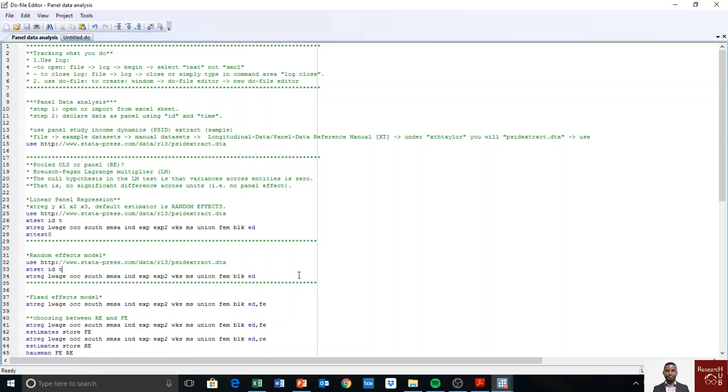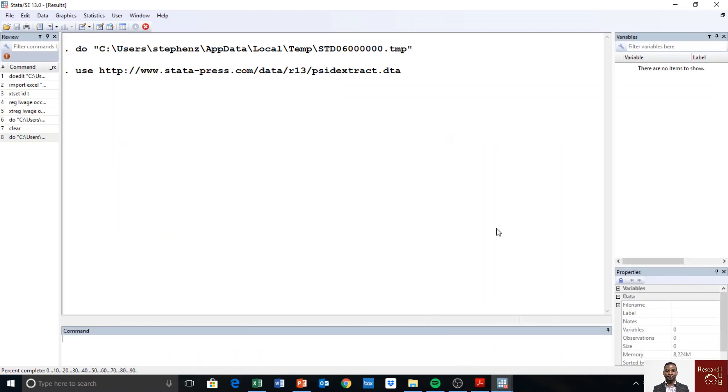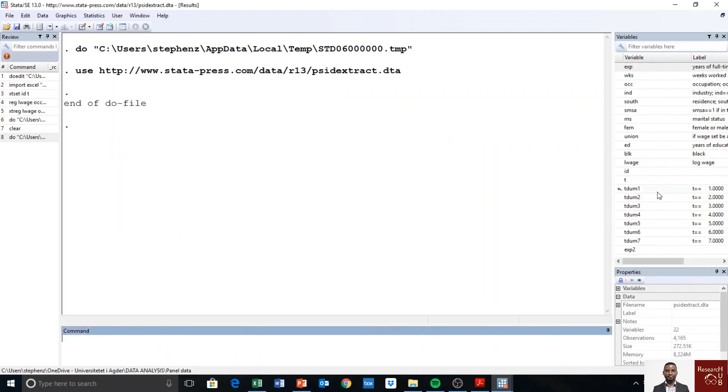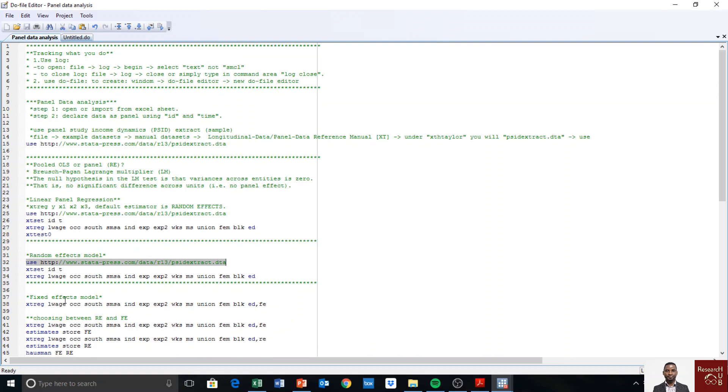All right so we use the same data set as I mentioned so I just load it to Stata, you know how to load it so now run. So we have the data set loaded into Stata. I want to run a random effects model so we already declared the data as panel so we don't need to repeat that. So I execute this command which is the xtreg.